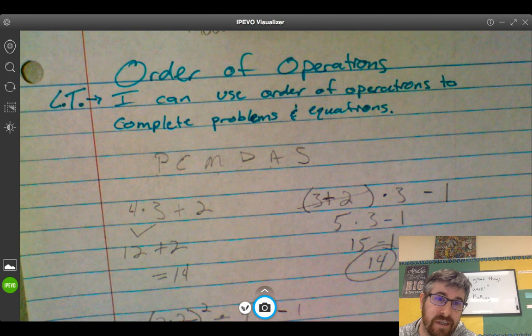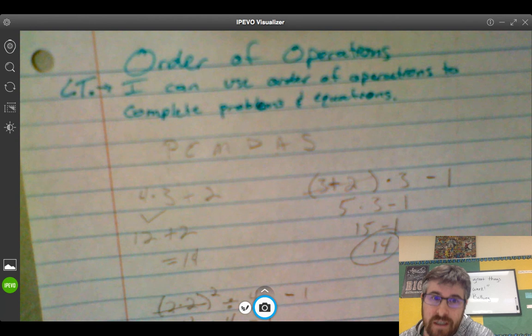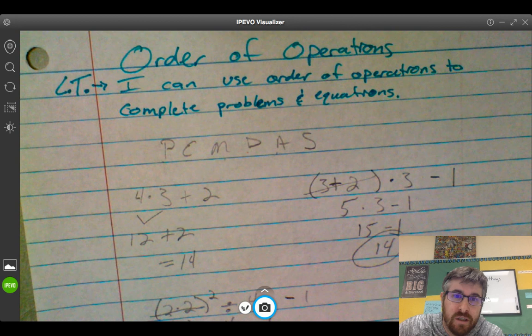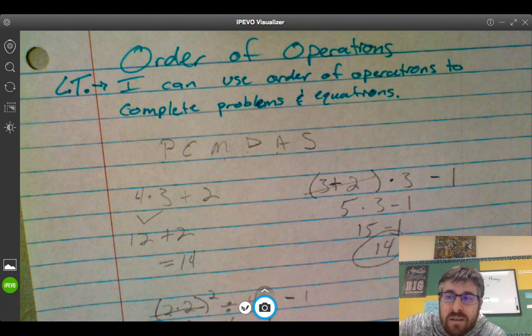P stands for parentheses. E stands for exponents. M, multiply. D, divide. A, addition. S, subtraction. And we always follow this exact order.